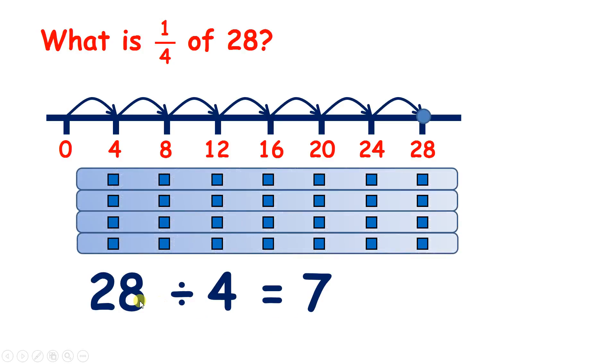Or, if we divide twenty-eight into four groups, we have seven in each group.